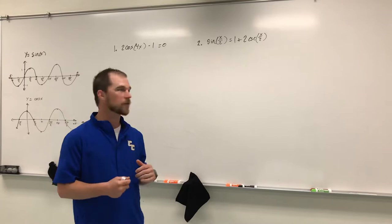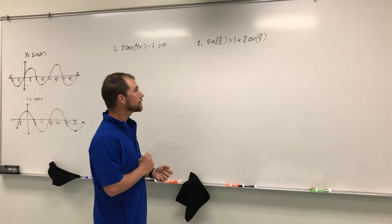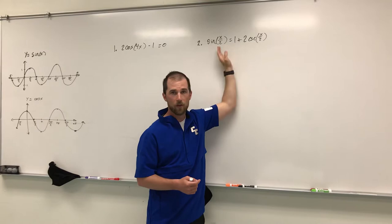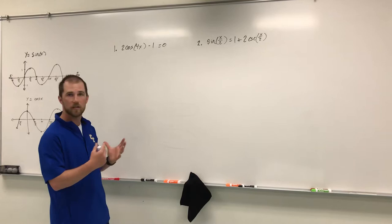For this video we are going to be solving trig functions with multiple angles. We have a 4x on our first problem and an x over 2 on our second problem. We're going to solve these the same way we would any other trig function. Since both trig functions in the second problem have an x over 2, we don't need a half angle formula, and since there's only one trig function in the first, we don't need the double angle formula.